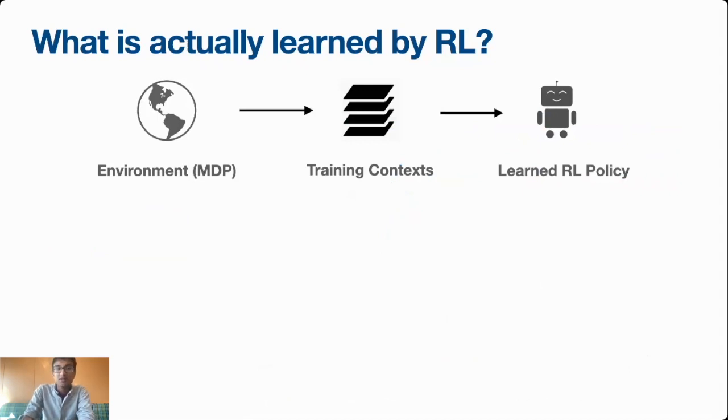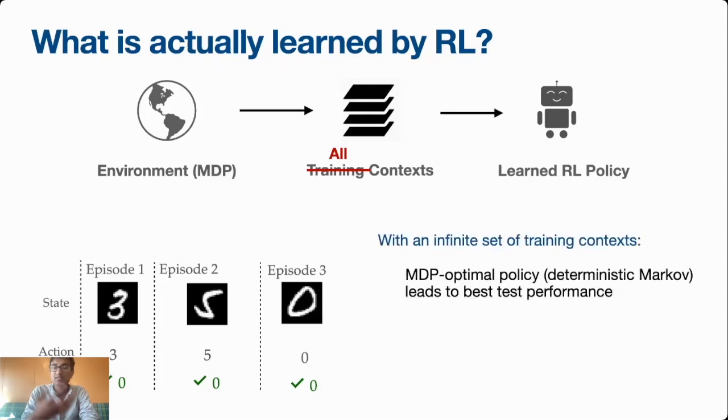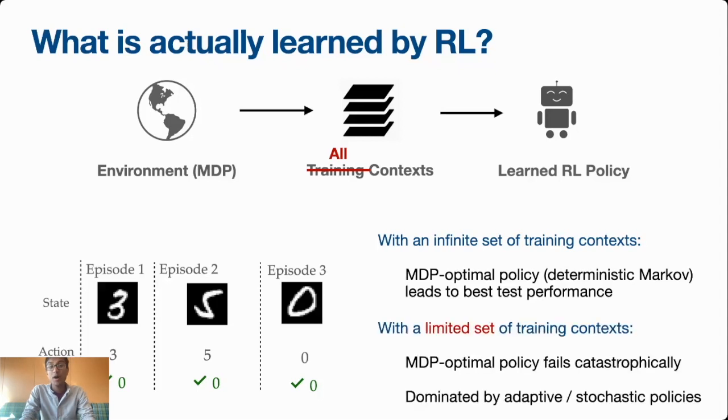To understand why, let's go back and imagine what would have happened. Instead of training on a set of training images, what if we trained on all possible images? In this case, if our policy was expressive enough, we would learn the correct mapping from images to labels. We would always guess the label correctly on the first try. Our policy would be deterministic Markov, and this is actually the best possible thing to do. So when we have an infinite set of training contexts, this kind of MDP optimal strategy actually leads to the best possible test time performance. But when we have a limited set of training contexts, when our agent might guess the label incorrectly or there's uncertainty about what the correct label is, then this kind of MDP optimal strategy fails catastrophically, and it's dominated by adaptive and even simple stochastic strategies.